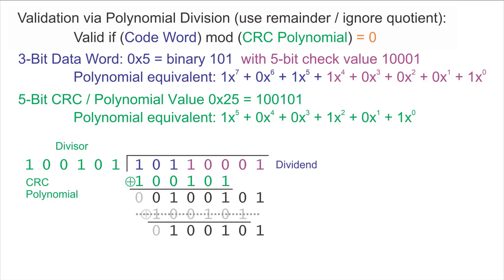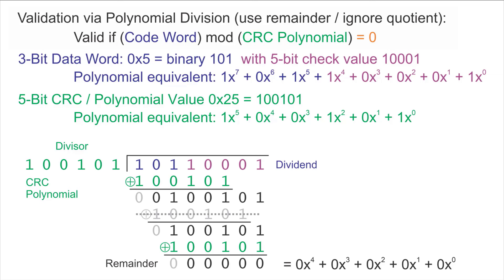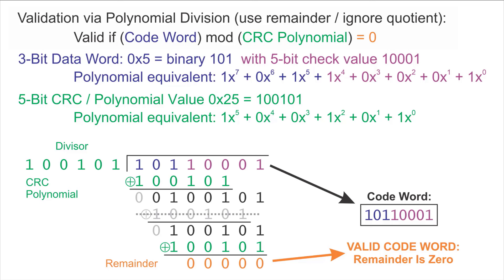We do one more trial XOR and find that it will work. The remainder turns out to be all zeros — 0·x to the 4th plus 0·x cubed plus 0·x squared plus 0·x plus 0. We have a remainder after dividing the code word by the CRC polynomial of zero, which tells us this is a valid code word. If the code word had been corrupted in a way detectable by a CRC, we would have gotten a non-zero remainder. If the value is non-zero, you know for sure that a corruption has occurred.